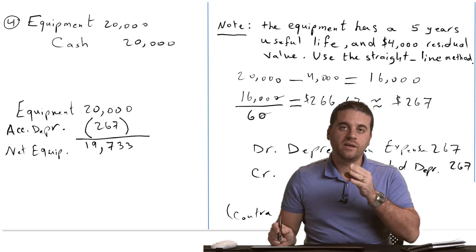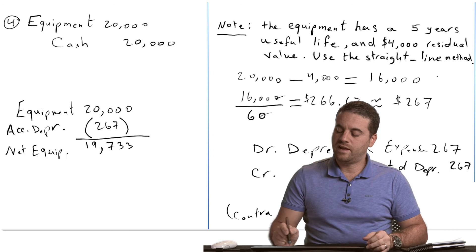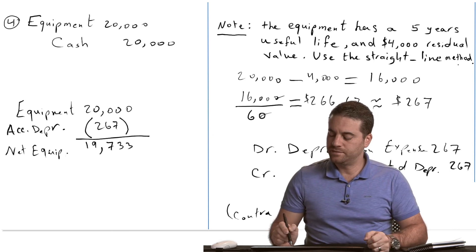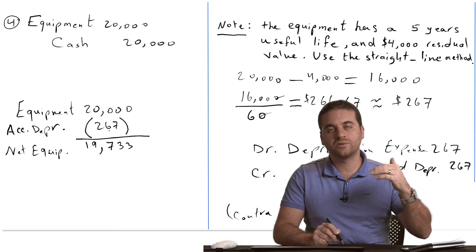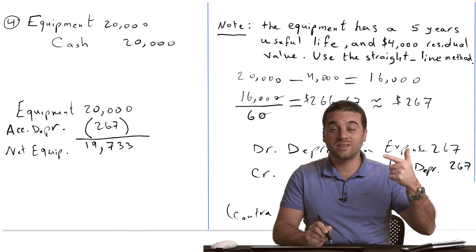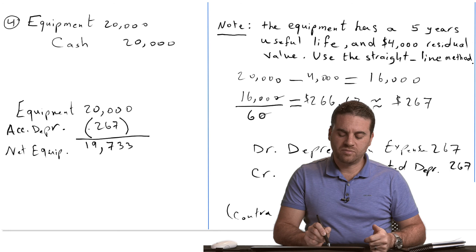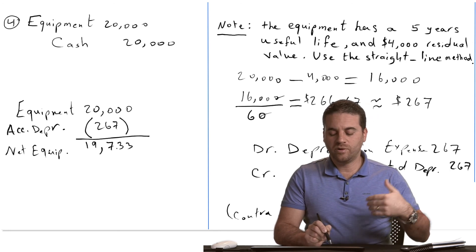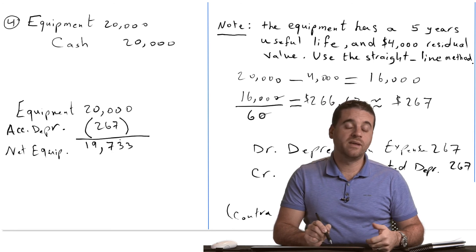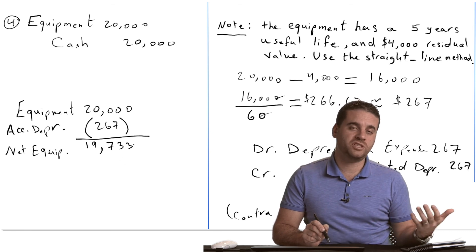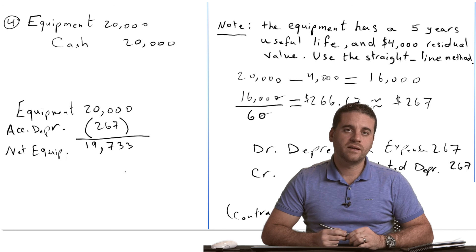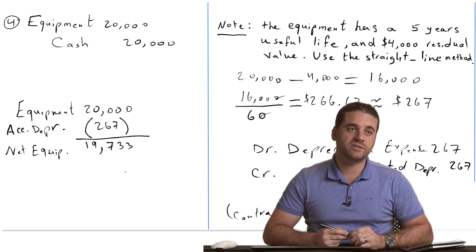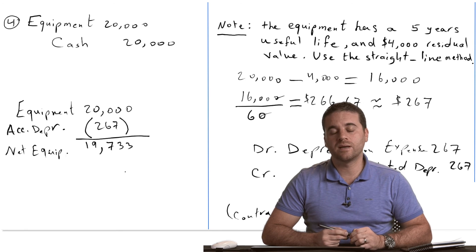Straight-line method means the amount of depreciation is the same every month. You record the same journal entry at the end of every month, so accumulated depreciation keeps increasing, and net equipment keeps decreasing. That's correct, because over time your net equipment has to decrease because you're depreciating it — because you're using it. Those are the four different examples. There are more examples for adjusting entries, but those are the most important ones for deferral transactions. In our next video, we'll talk about accrual transactions.